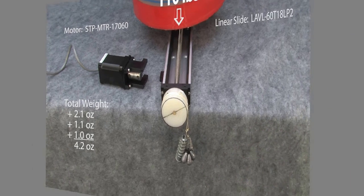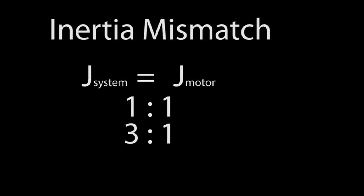And one more thing to be aware of – inertia mismatch. In a perfect world, you want to match your motor's rotor inertia to the system inertia. That will give you the absolute best possible motor performance. But in practice, if you can keep it within a 1 to 3 or 1 to 5 range, you will be in pretty good shape.